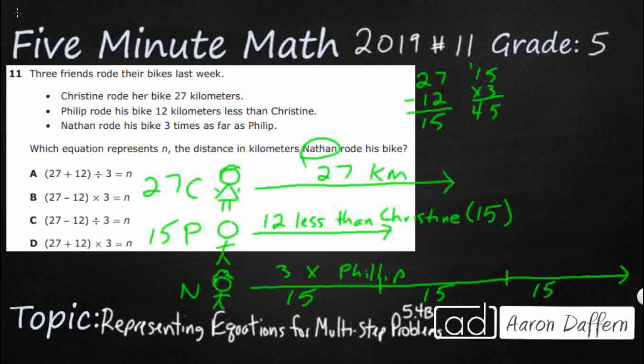So Nathan went 45 miles, but as you can see, it is not asking for this number 45, which we just calculated. It is asking for the equation.